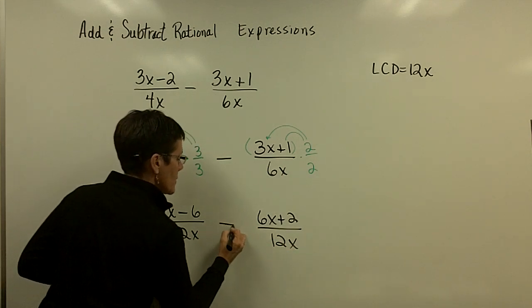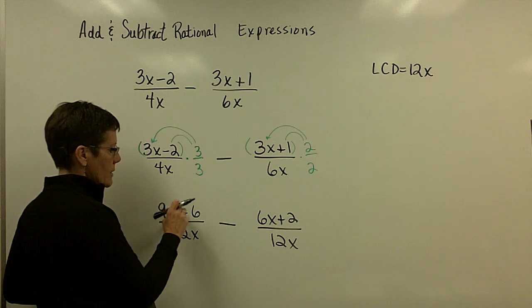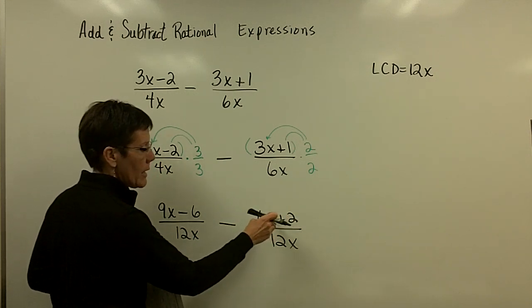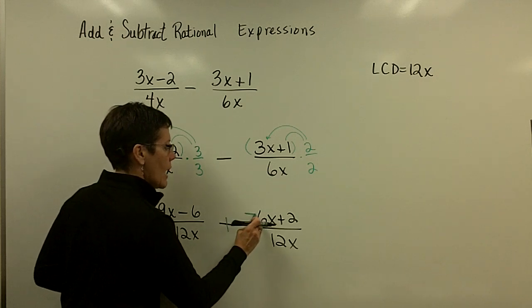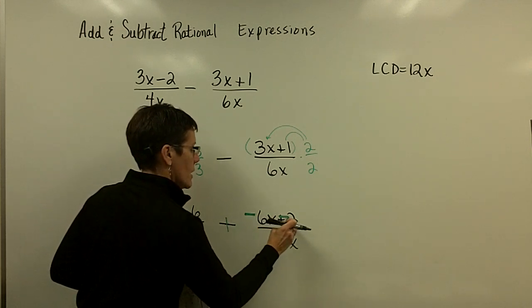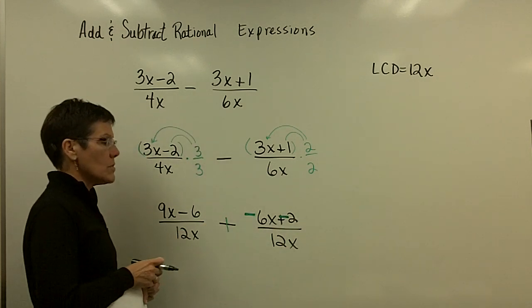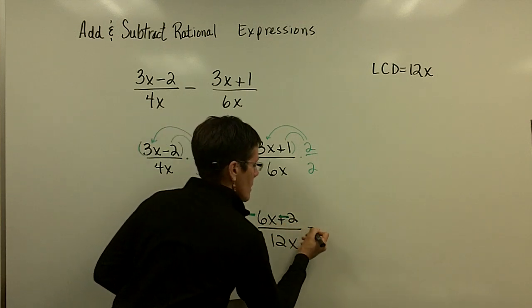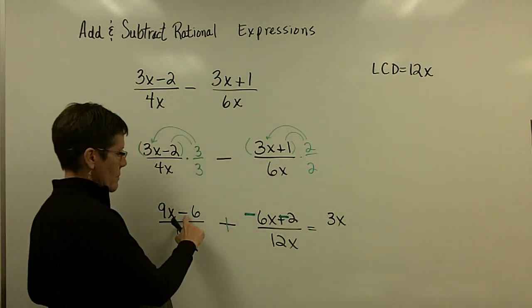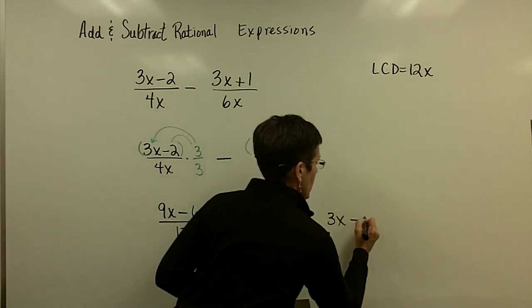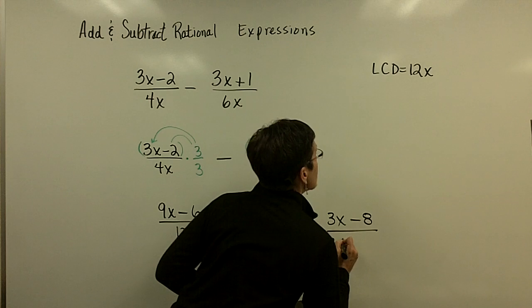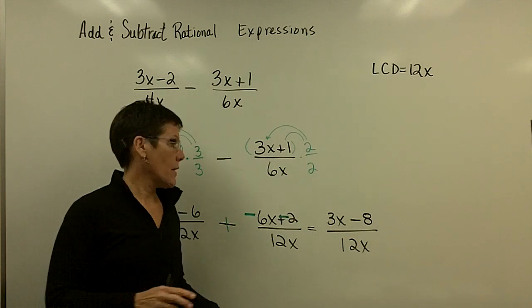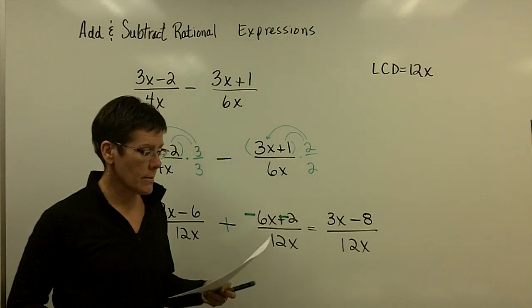But remember, this is a subtraction problem. So, when I take this numerator and subtract that numerator, it's like multiplying all of it by a negative 1 or adding the opposite of these. So, again, use that color so that you can see which sign prevails. And the 9x minus 6x is a 3x. And this minus 6 and a minus 2 is a minus 8 over the common denominator of 12x. And there's nothing else that I can do with that. Again, nothing that can be done with that 3x and that 8.